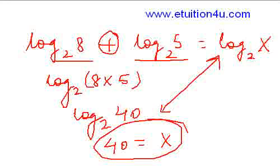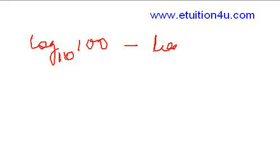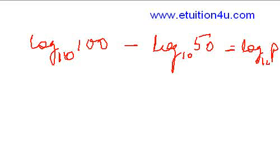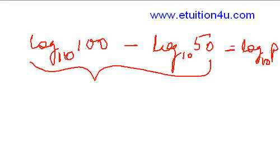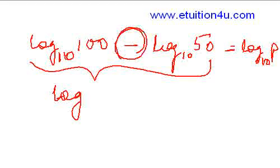Let's take another question. Let's say we have this time log hundred to the base 10 minus log 50 to the base 10. This is given to be equal to log p to the base 10 again. Now, this side of the equation: log is distributed over hundred and 50 and these two are being subtracted.